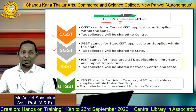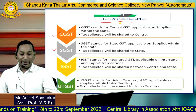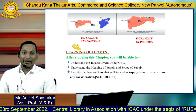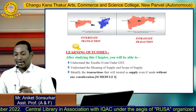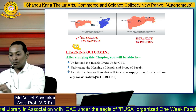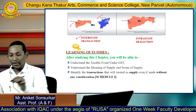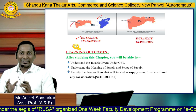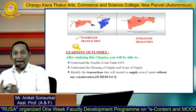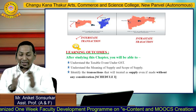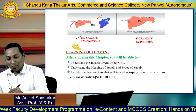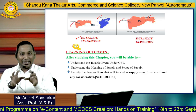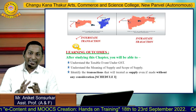I am showing two important pictures here. In the first picture, the supplier is from Mumbai and the recipient is from Chennai — this is called an interstate transaction. In the second picture, the supplier is from Mumbai and the recipient is from Nagpur. Both cities are situated in the state of Maharashtra, so this is called an intrastate transaction.